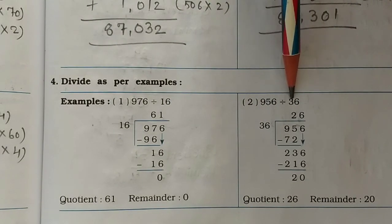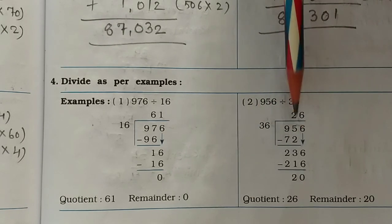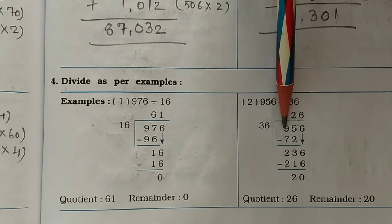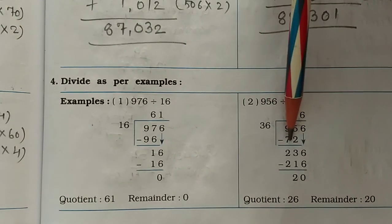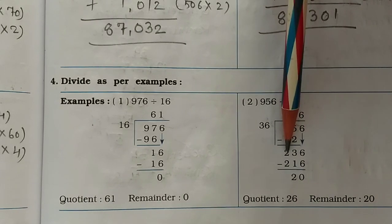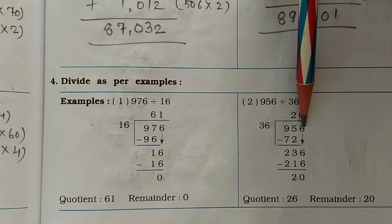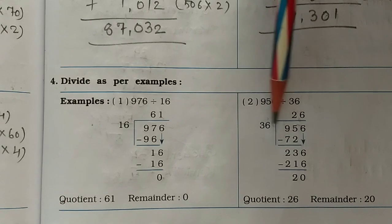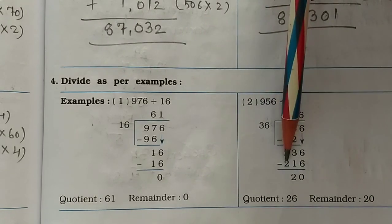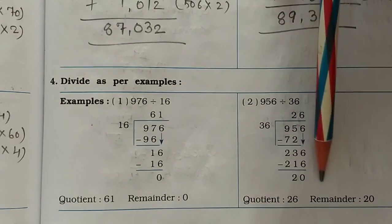Now the second example: 956 divided by 36. Write 36 here. 36 twos are 72 — write 72 here. Subtract 72 from 97, you get 25. Bring down the 6 to get 256. Now 36 sixes are 216, subtract and you get 20. So your answer is 26 and the remainder is 20.